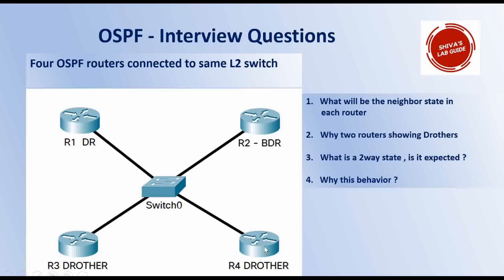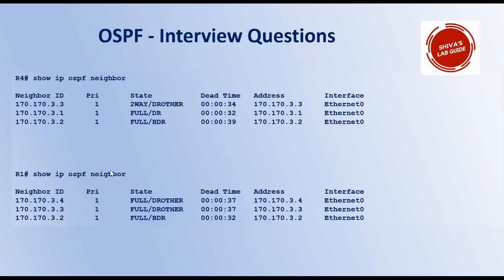That's why DR other routers form full adjacency only with the DR and BDR — the DR then sends all link state updates to those other routers. Sometimes the question comes up: is the two-way state expected, or is the neighborship failing due to an issue? The two-way state here is expected because neighborship will not form between DR other routers. As long as you have full adjacency with your DR and BDR, you will get all the routing information you need.